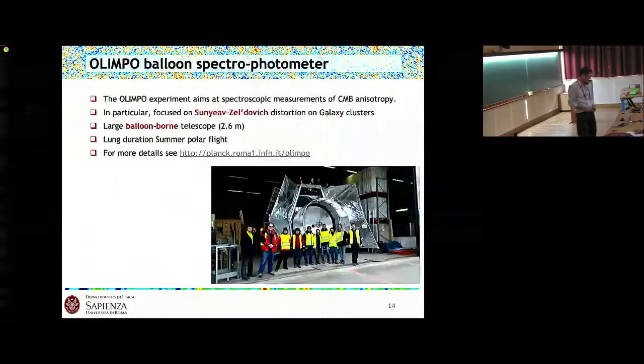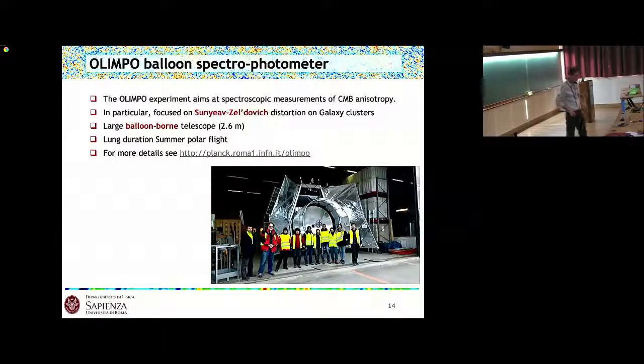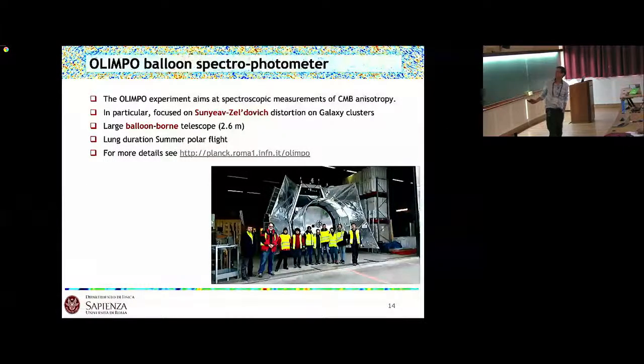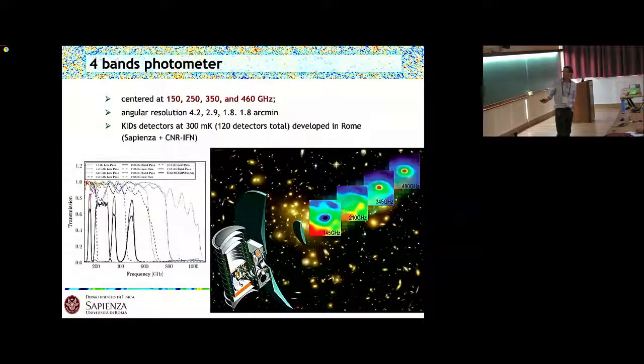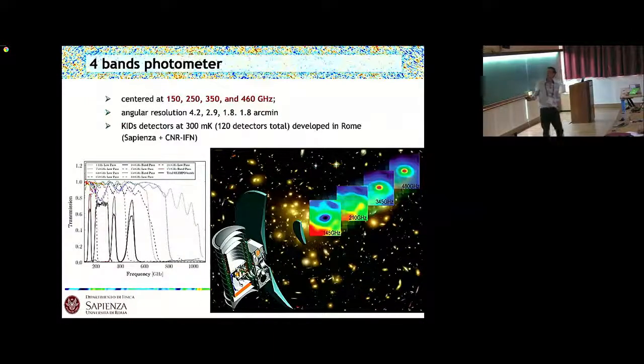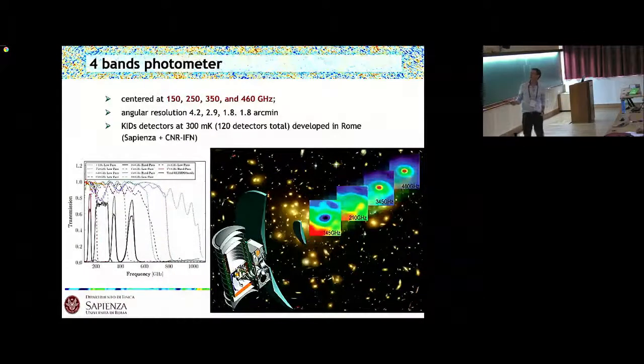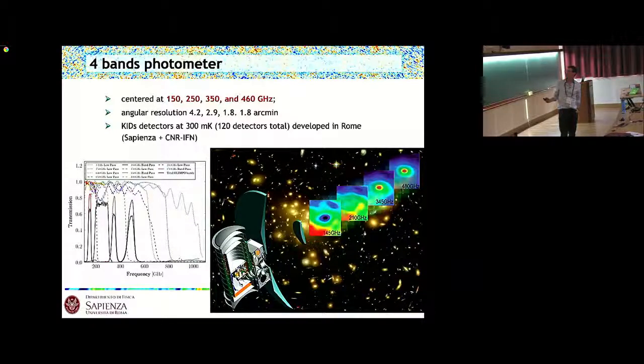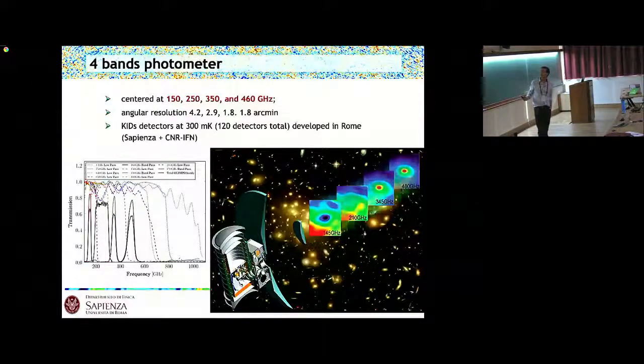Another experiment is OLIMPO. This has been flown last summer. OLIMPO is to measure, to make a spectroscopic differential measurement of the CMB and in particular to detect and characterize the Sunyaev-Zeldovich effect on galaxy clusters. It's a large 2.6 meter telescope mounted on a balloon with a long-duration summer flight. Here are the four bands of the system: the bands are centered at 150, 250, 350, and 460 gigahertz with this angular resolution. We adopted KID detectors at 300 milliKelvin, developed in Rome by my group and another research center nearby. We have made 120 detectors in this case.